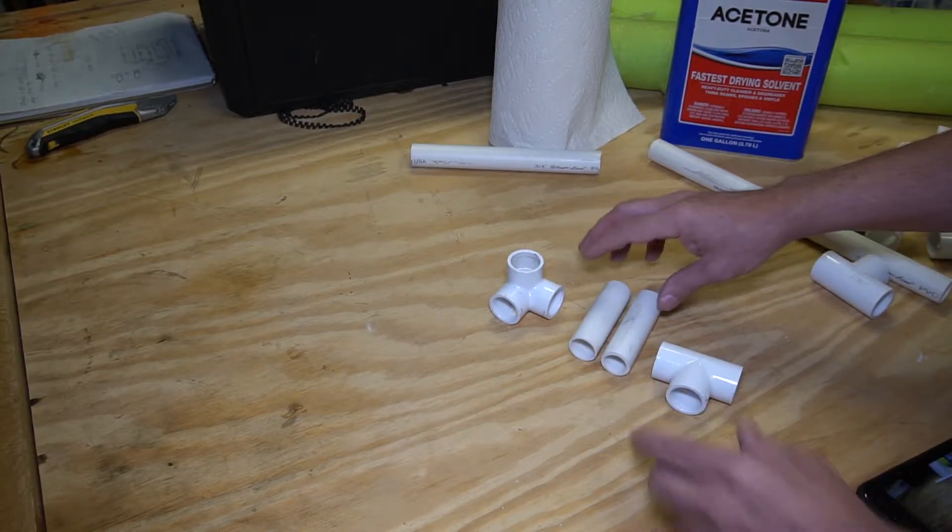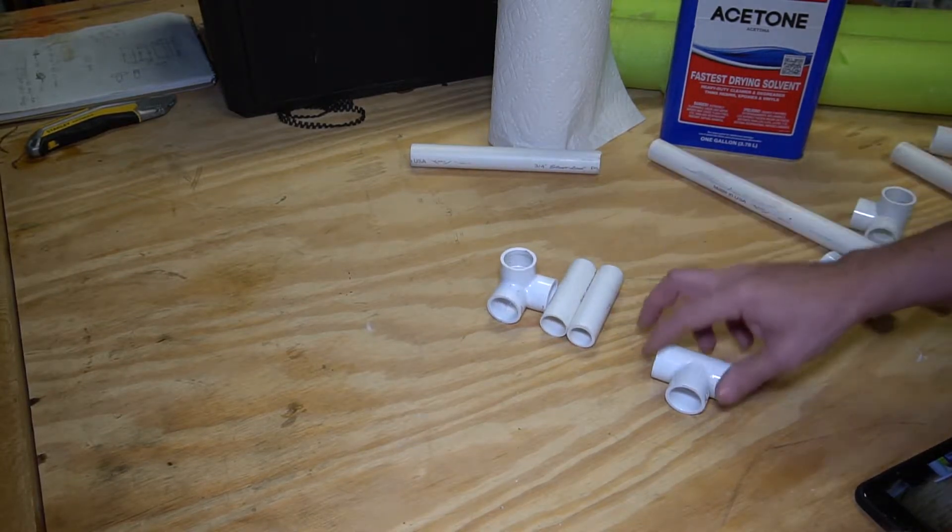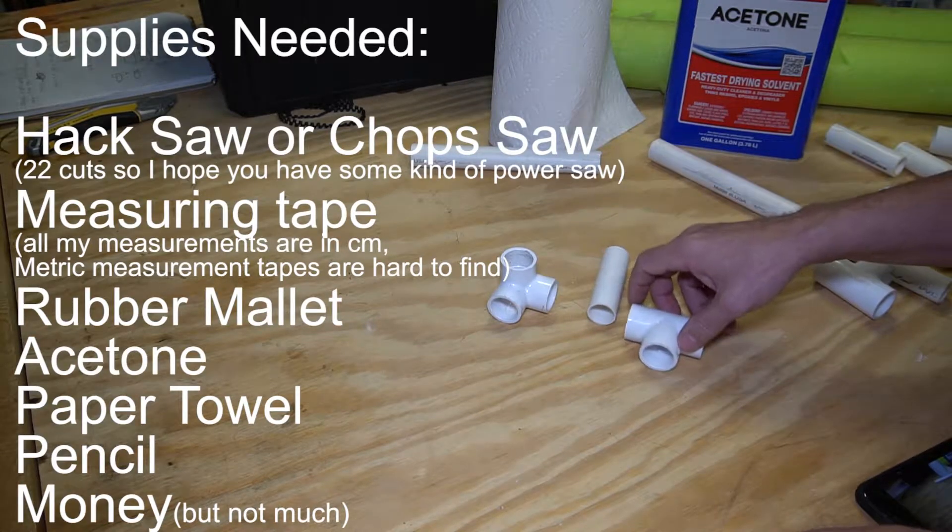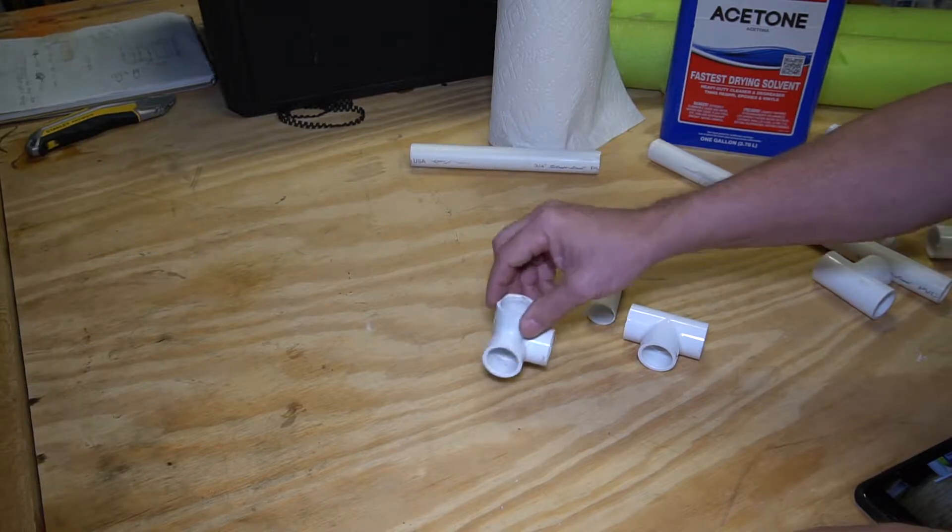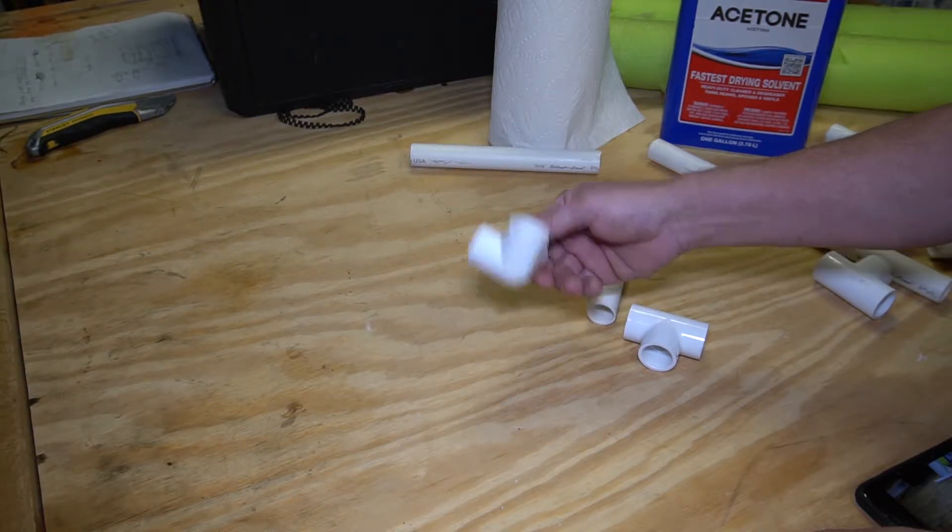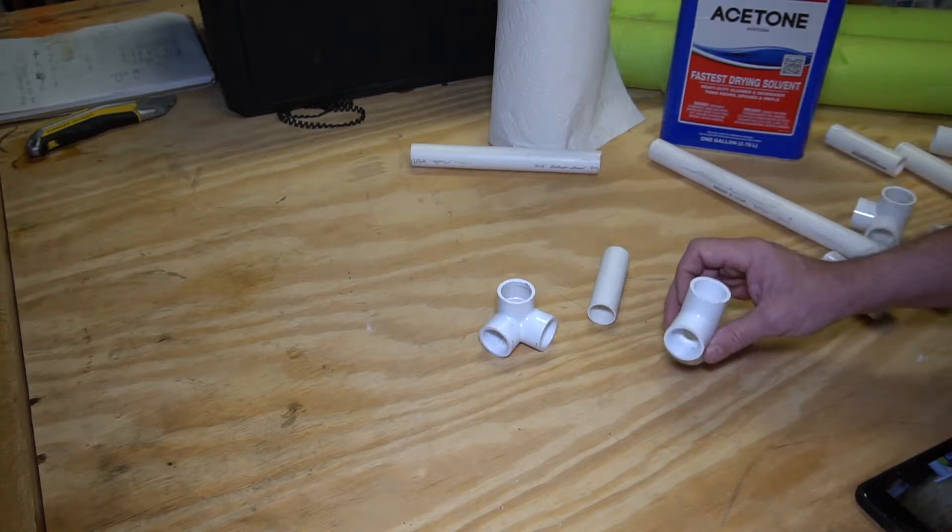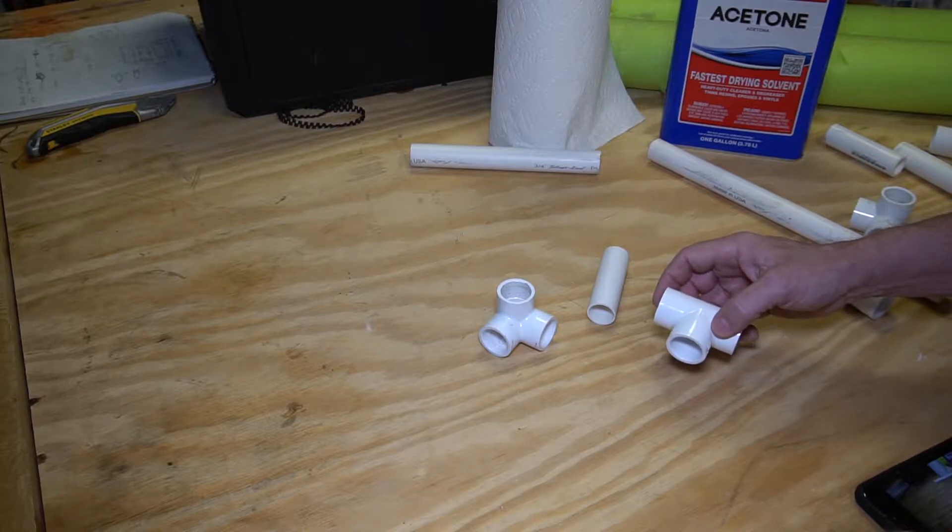So those are the three components you need. Once you've got your tubing and your connectors, you're going to need four of these connectors for the bottom, these three-way tees, and you're gonna need four for the top. So you're gonna need at least eight of those connectors and then you'll need four of these connectors for each level of the racks in the middle.